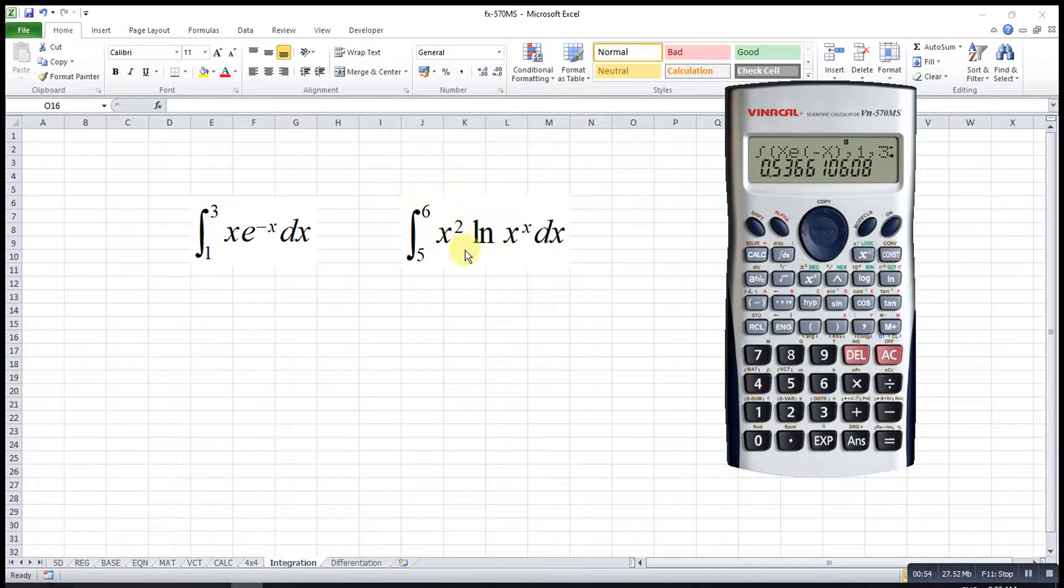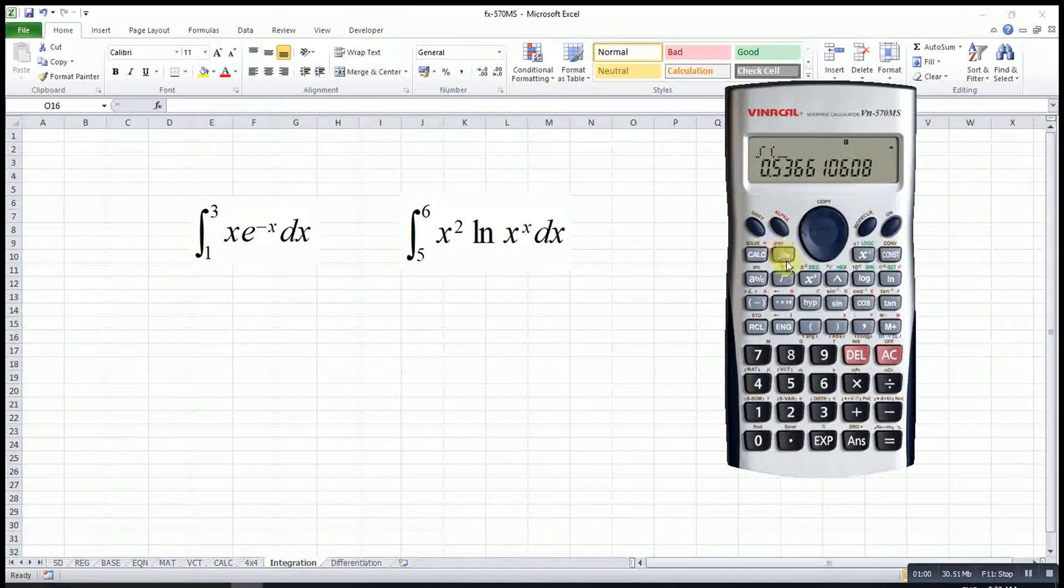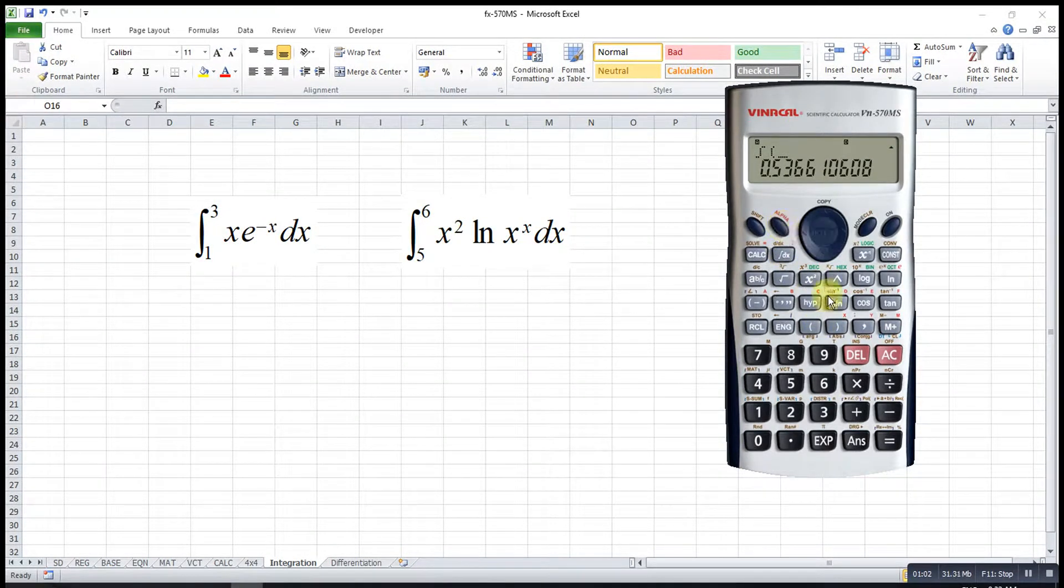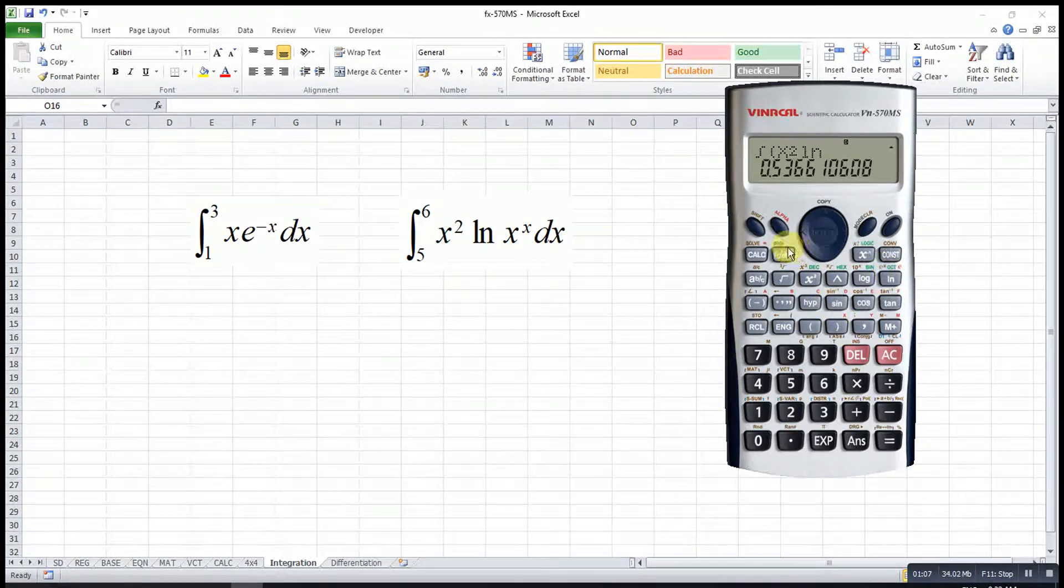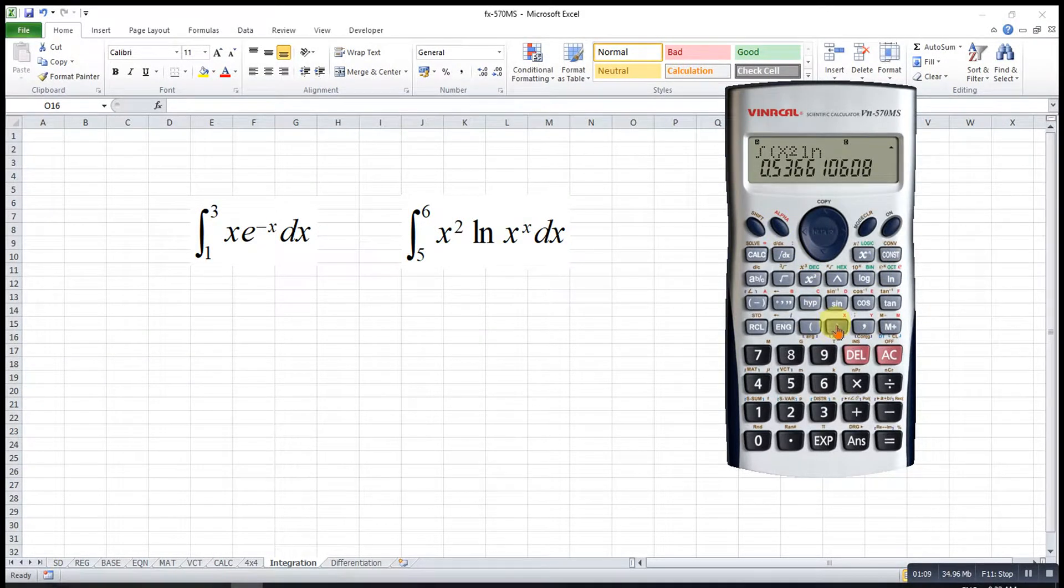Now we try for the other example. Press the integration, so alphabet square, then log alphabet x. For this one we have to bracket the x, then power x. Then from 5 to 6. So this will be the answer.